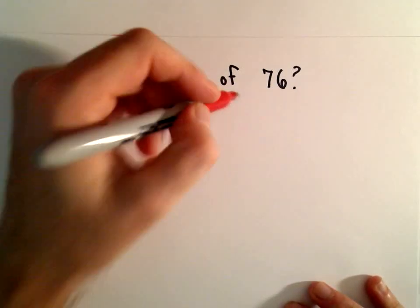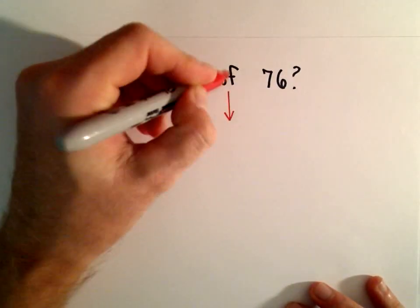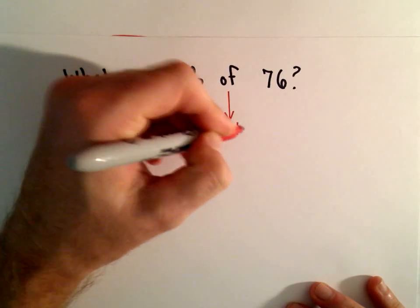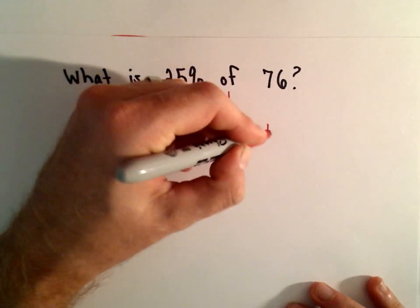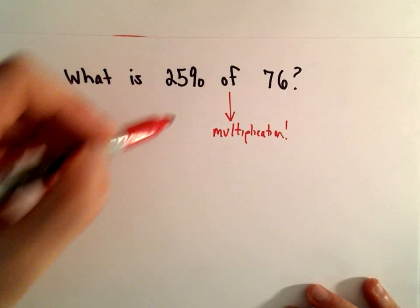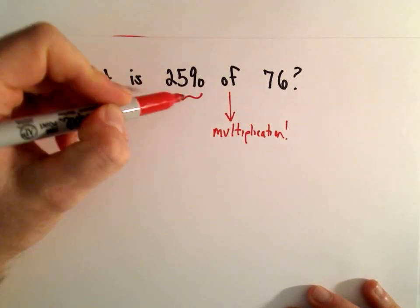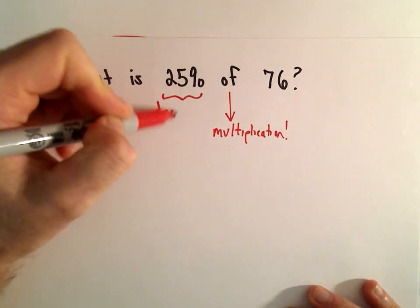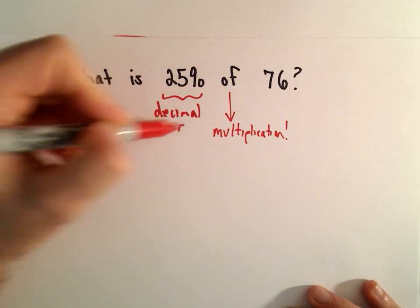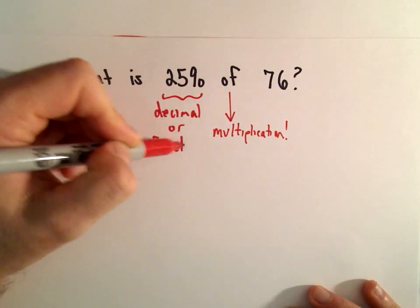Whenever you're finding a percentage of a number, you can read of, basically, just replace it with multiplication. And the only thing we need to do is we need to turn 25% either into a decimal or a fraction before we multiply.